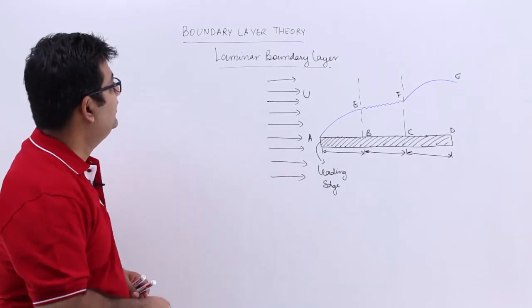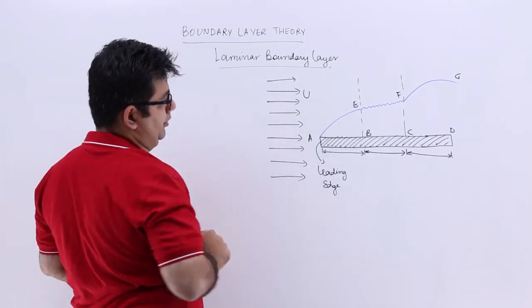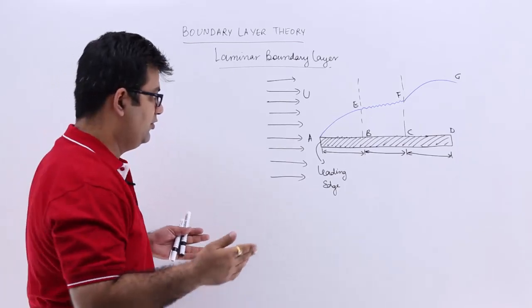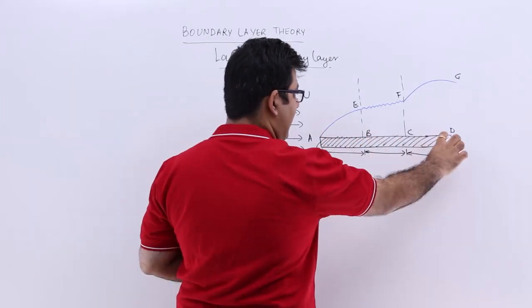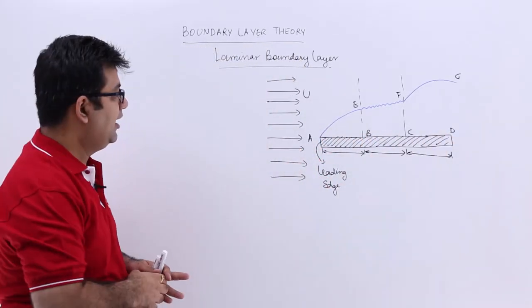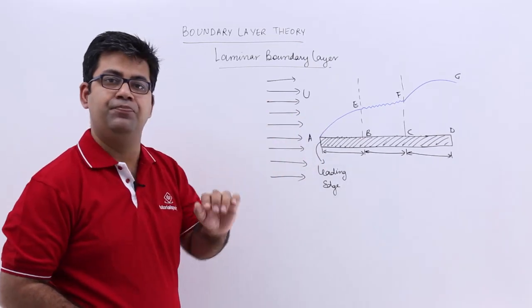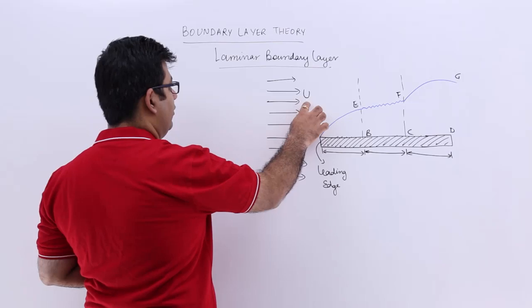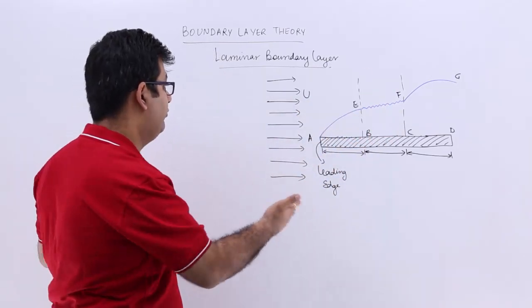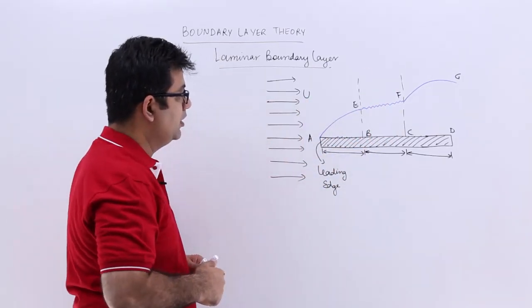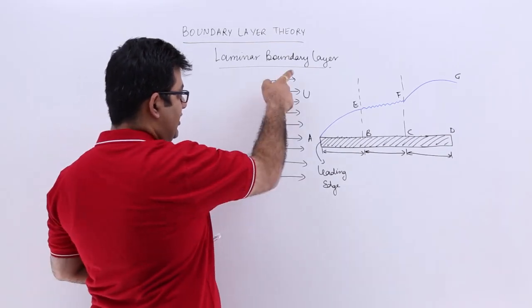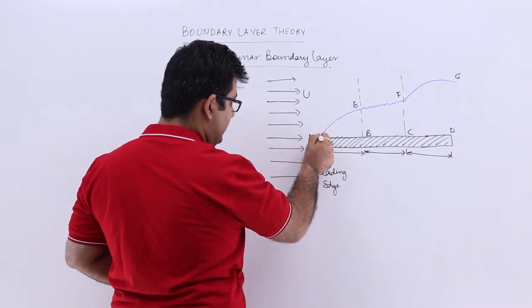Now let's talk about the laminar boundary layer. For that, let us assume we have a plate, and you have a real fluid flowing in that direction. The mainstream or free stream velocity of this fluid is capital U.